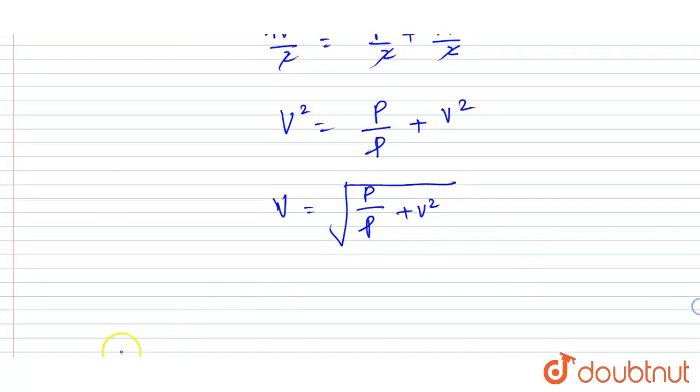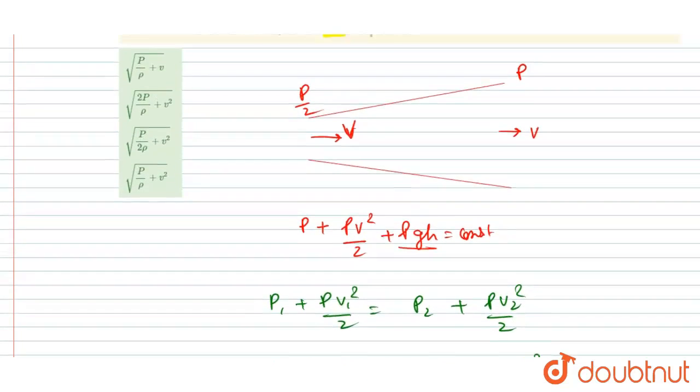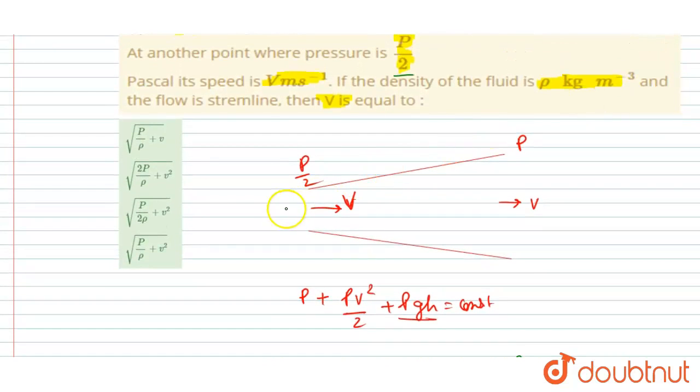So this will be our answer. Now you can match the option. So under root p by rho plus v square, so D is the correct one. Under root p by rho plus v square.